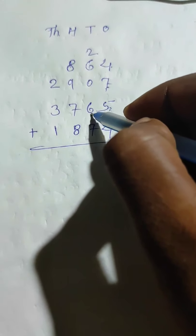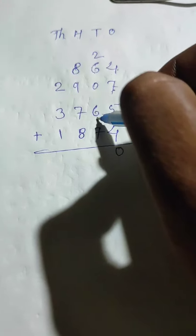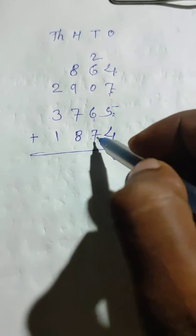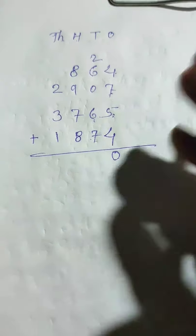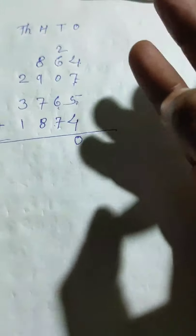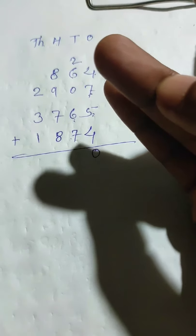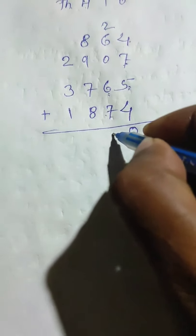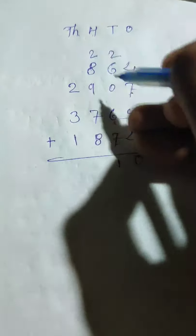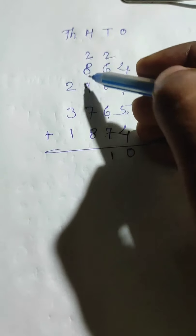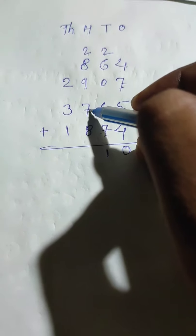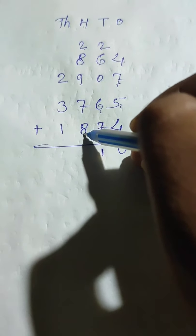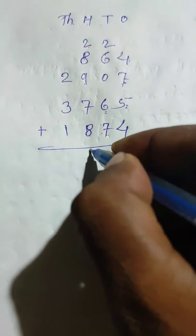Six plus six is twelve, thirteen, fourteen. Fourteen plus seven - if you can't quickly get this, count seven numbers from fourteen: fifteen, sixteen, seventeen, eighteen, nineteen, twenty, twenty one. So twenty one. Write one then carry two to hundreds place.